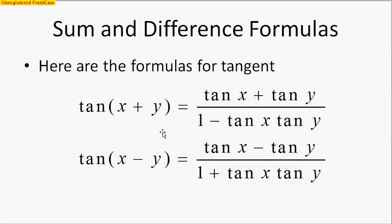Here are the ones for tangent — tangents look even more strange. Tangent of x plus y equals tangent of x plus tangent of y in the numerator, and the denominator is 1 minus tangent x times tangent y. For tangent with subtraction, in the numerator we have tangent x minus tangent y, and in the denominator we have 1 plus tangent x times tangent y. There are many uses of these formulas and we're going to go through a couple of them in this video.